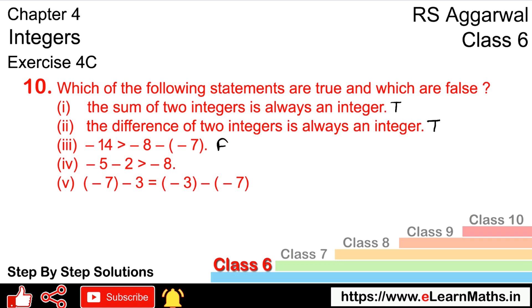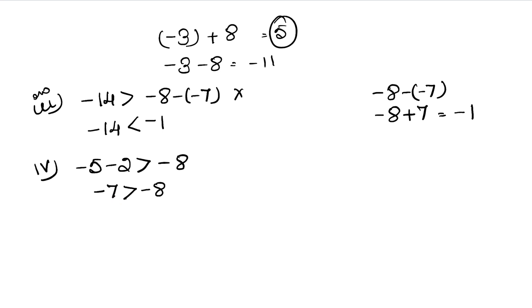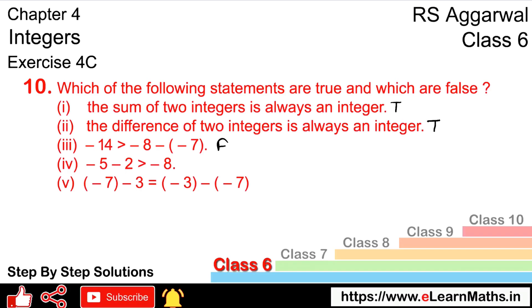The next part is: is minus 5 minus 2 greater than minus 8? Minus 5 minus 2 equals minus 7. In the case of negative numbers, the smaller the digit, the larger the value, so minus 7 is greater than minus 8. Hence, this statement is true.